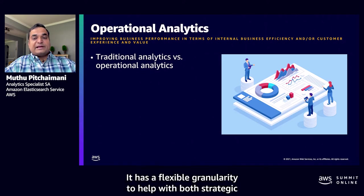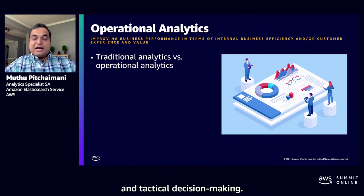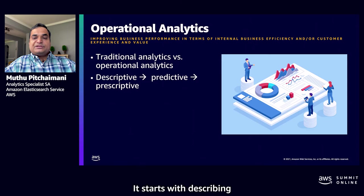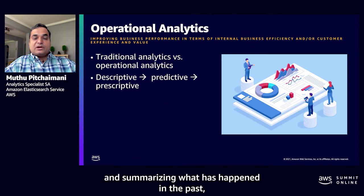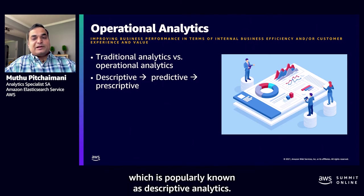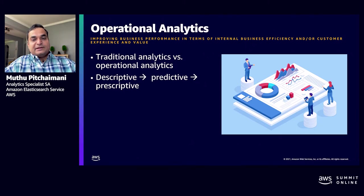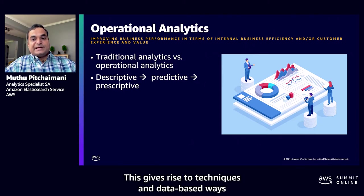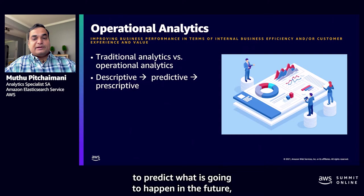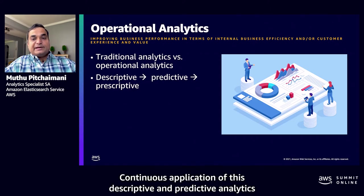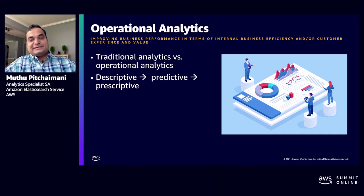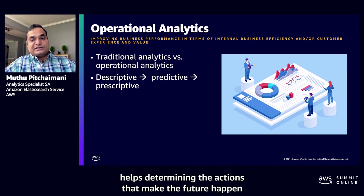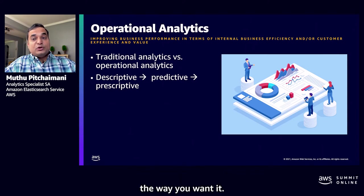Operational analytics has flexible granularity to help with both strategic and tactical decision making. It starts with describing and summarizing what has happened in the past, which is known as descriptive analytics. This gives rise to data-based ways to predict what is going to happen in the future, called predictive analytics. Continuous application of descriptive and predictive analytics helps determine the actions that make the future happen the way you want — this is called prescriptive analytics.